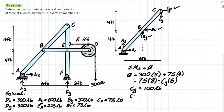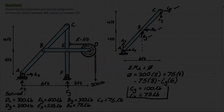Our final answers are Cy = 100 pounds and Cx = 75 pounds. This was a great problem for understanding the concept of pins — when transferring reactions from one member to another, they are equal and opposite. It also gives a clear introduction to how pulleys behave within different free body diagram systems.